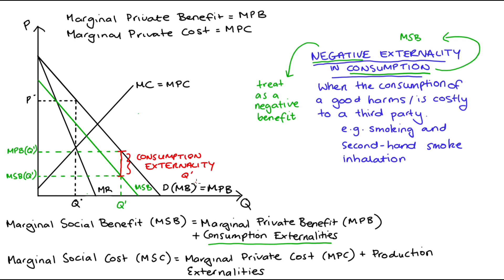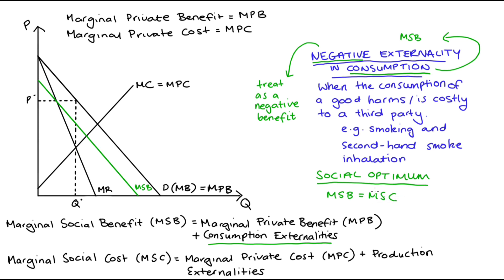The most common thing we do with a diagram like this is think about market failure and deadweight loss. A market is working efficiently when we produce where marginal benefit equals marginal cost, exhausting all units where benefits exceed costs. When we have externalities, we want this equality to hold for our social curves — where marginal social benefit equals marginal social cost — and this level of production is what I call our social optimum.